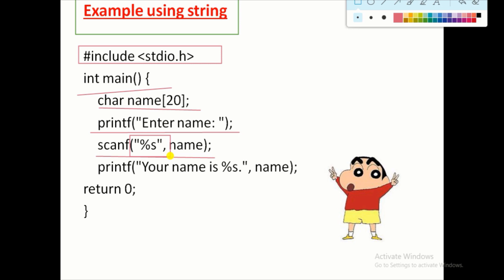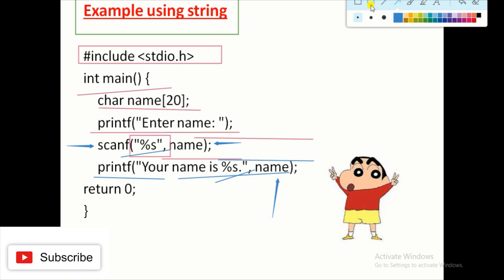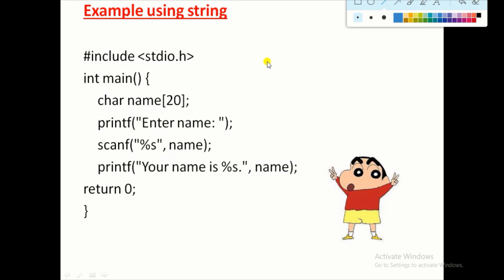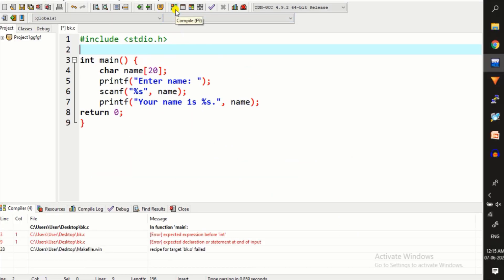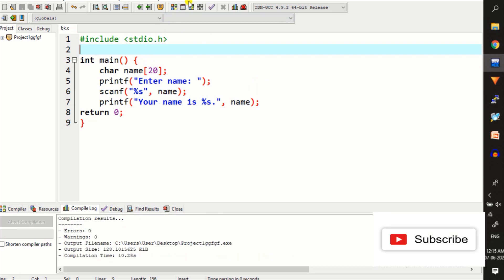Using the scanf function we take the value from the user and store it inside the 'name' variable. After taking the value, if we want to display it, we use printf: 'Your name is %s', followed by the variable 'name'. It gets the value stored in 'name' and displays it. Finally, add 'return 0'. Now practice this code inside DevC++. I compile the code — there is no error or warning — and then run it.